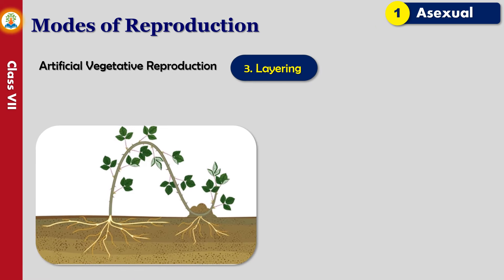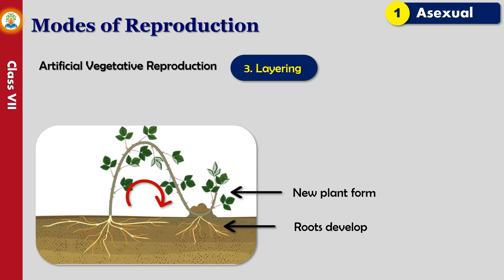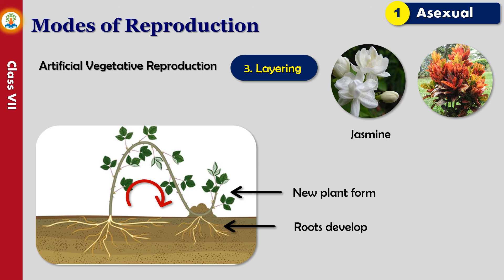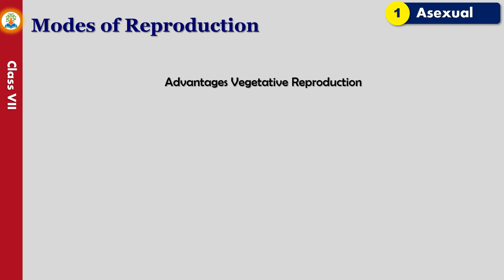In the layering method, the branch of a plant is bent down to touch the ground. This branch is then covered with soil. After some time, roots start growing from the covered part, which is then separated from the original plant. This method is used to reproduce plants such as jasmine and croton.